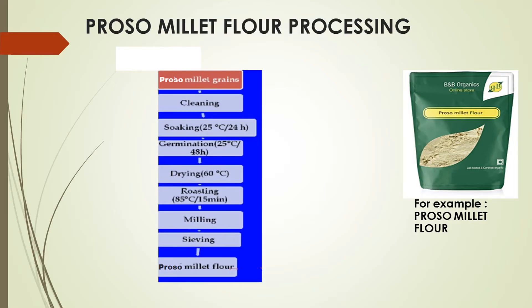Let's move further to ProSomulets flour processing, where we obtain flour. The steps are: ProSomulet grains which we have obtained are first cleaned using a cleaner. After that, soaking is done at 25 degrees Celsius for 24 hours. Soaking is done to remove anti-nutritional factors like polyphenols and phytates, and also it makes the grinding easy.